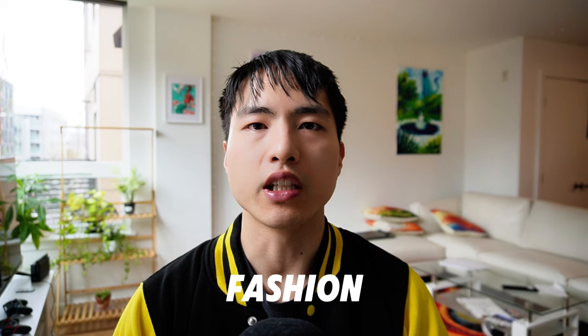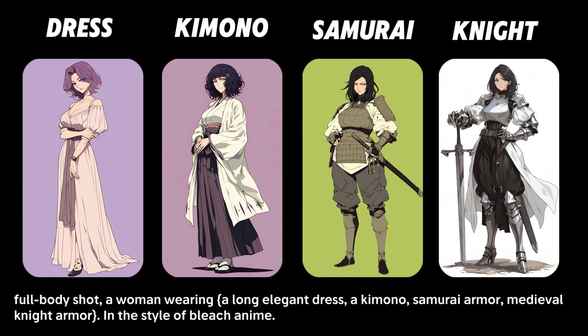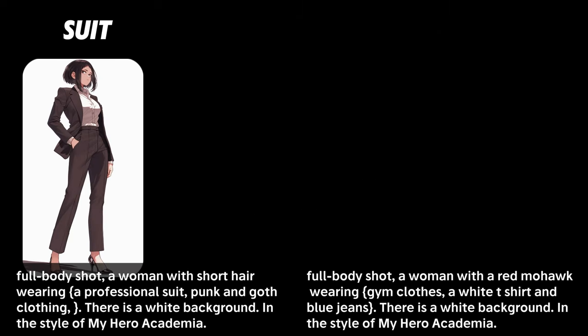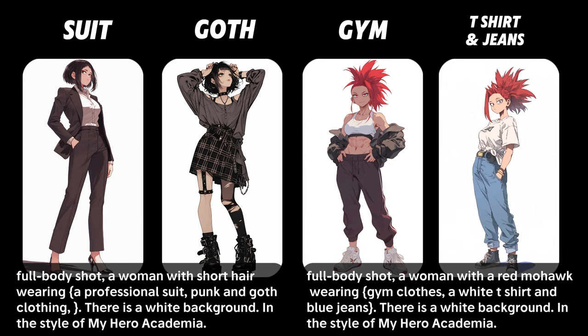For fashion, you're only really limited by your imagination. There's all different types of armor you can try, from shiny medieval knight armor to stealthy ninja attire. I really like the way my characters look with the straw hats on — I think it adds an aura of mystery. For modern attire, one tip is styling your characters after specific themes like mushrooms or strawberries. I combine streetwear with fruits, flowers, and plants and the results turn out pretty well. You can go with professional attire like a suit, or something more casual like a goth and punk outfit, gym wear, or the everyday white t-shirt and blue jeans.